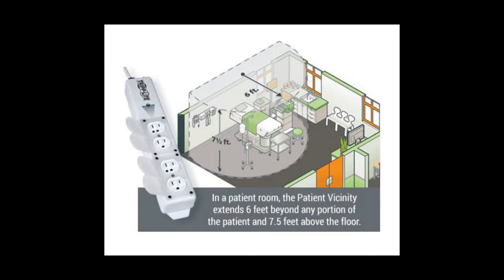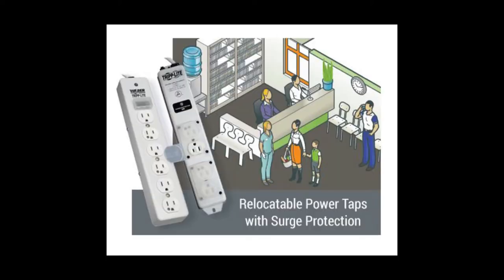The patient treatment vicinity is defined as six feet extending from the patient in all directions and 7.5 feet up the walls from the floor. Since these power strips are the most basic, I won't waste any more time talking about them.